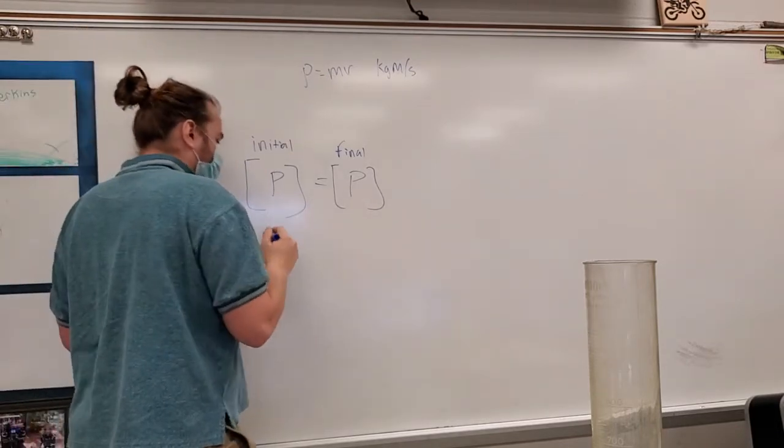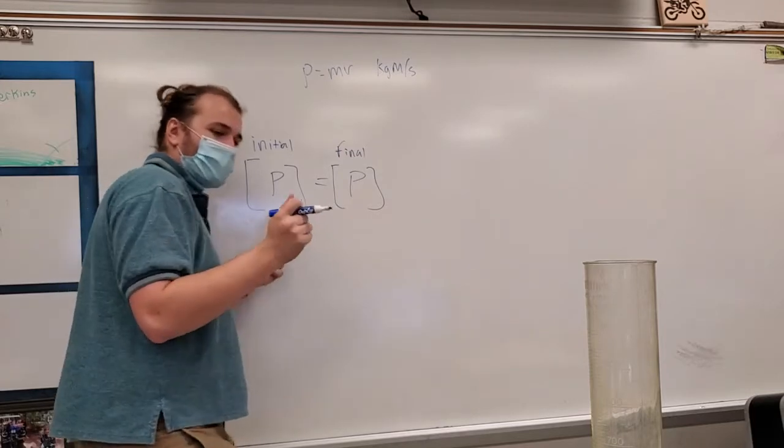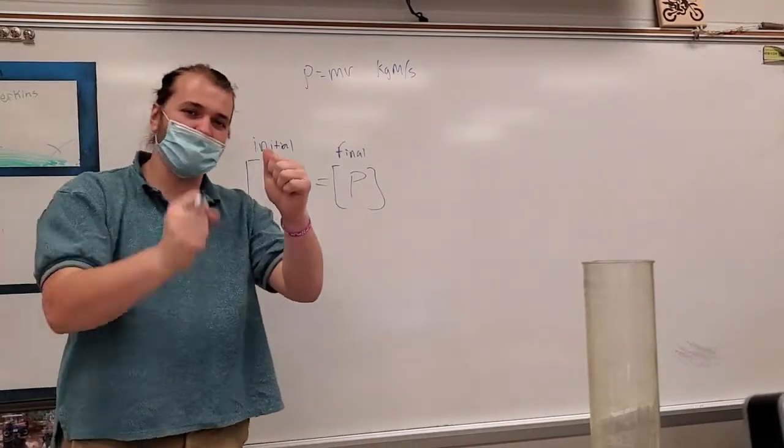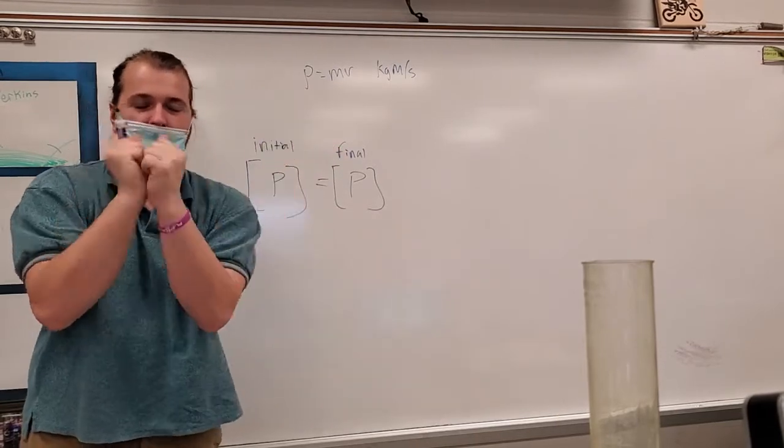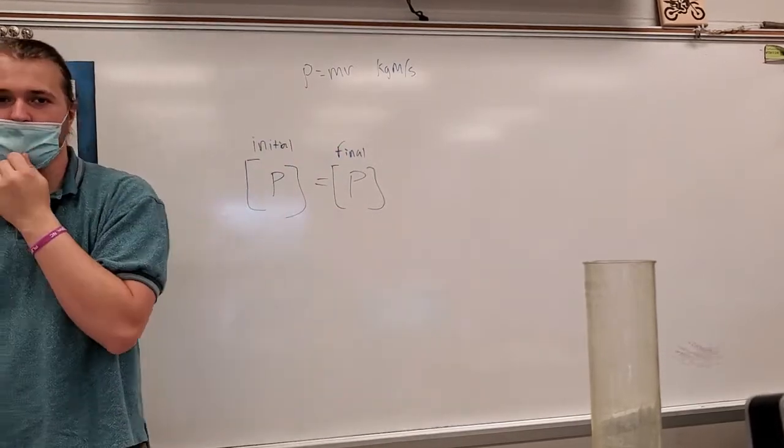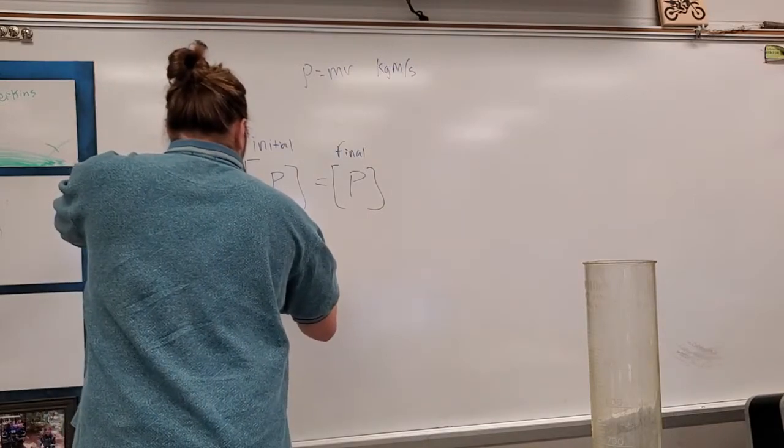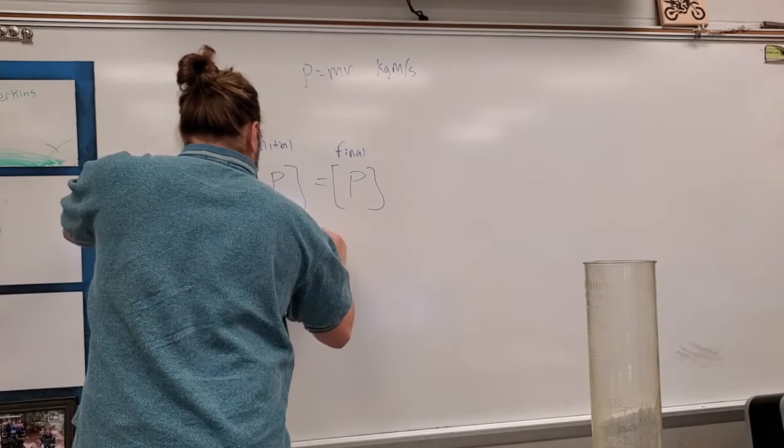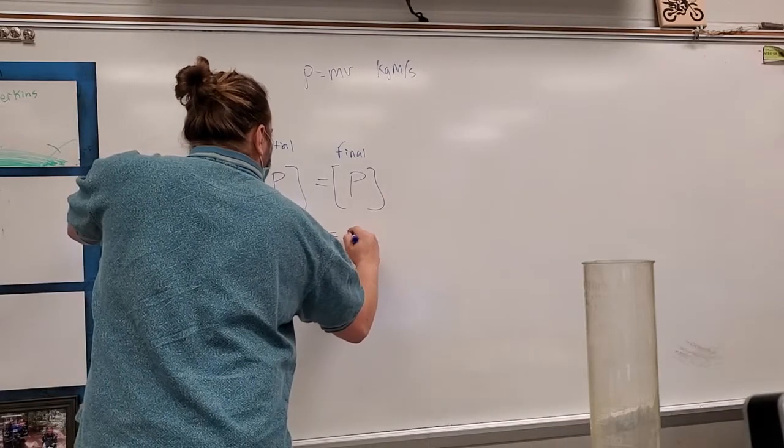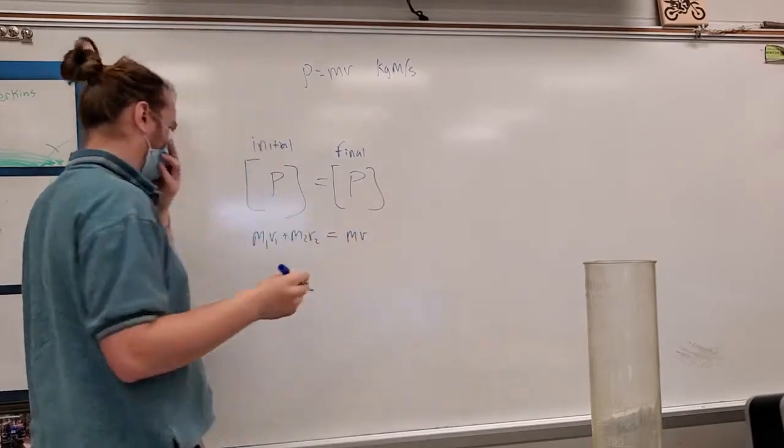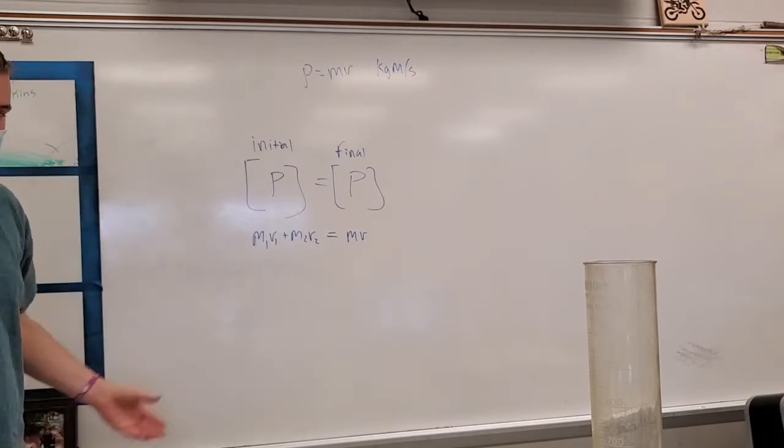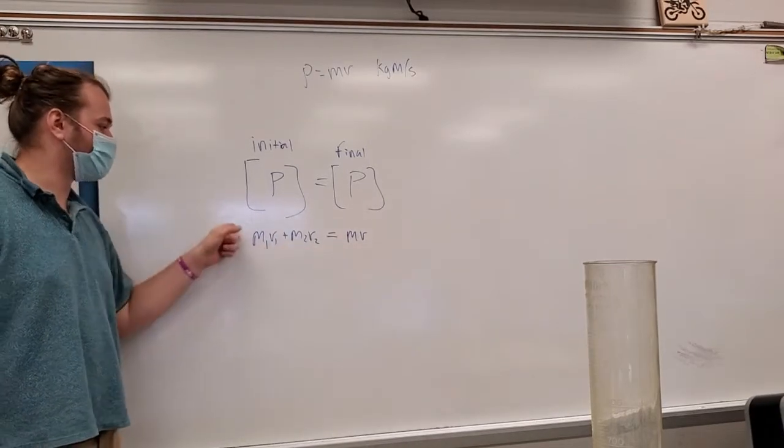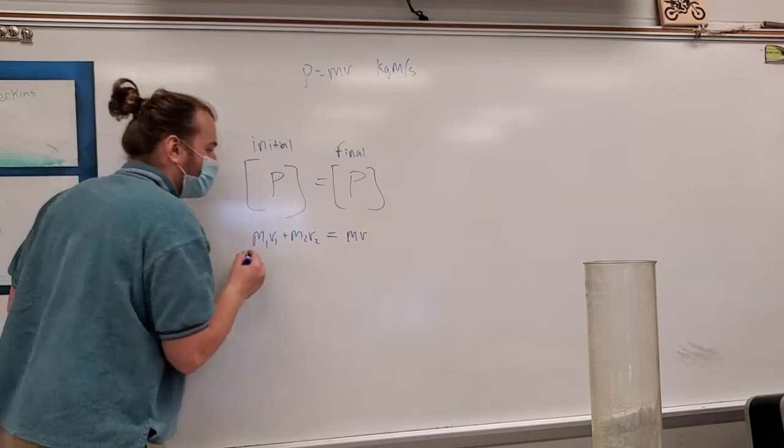If we say we have two things, they come together and they stick together, we have a mass with the velocity, a mass with the velocity, they collide together and they move in one direction. It would look like m1 v1 plus m2 v2 is equal to mv. And that's that. That's all this is. It's just conservation of momentum. Everything is equal.